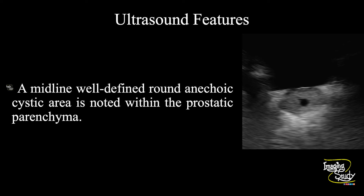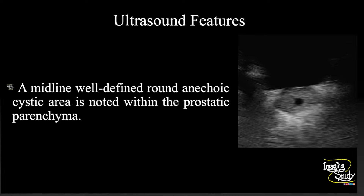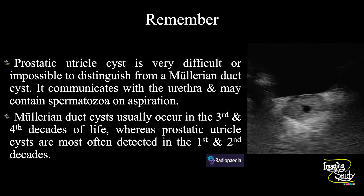In summary, a midline well-defined round anechoic cystic area is noted within the prostatic parenchyma, indicating a midline prostatic cyst. Now the take-home message. We have two differential diagnoses when we talk about the midline prostatic cyst: one is the prostatic utricle cyst and another one is the Mullerian duct cyst.